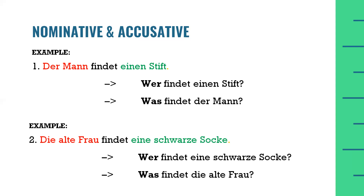Another way to identify nominative and accusative is by asking questions. If we ask with the W-question word 'wer,' the answer will always be nominative — so 'die alte Frau' is the nominative case. Whenever the question is asked using the W-question word 'was,' the answer will be the accusative case. So: 'Was findet die alte Frau?' — 'Eine schwarze Socke.' Therefore we apply the accusative rules to 'eine schwarze Socke.'